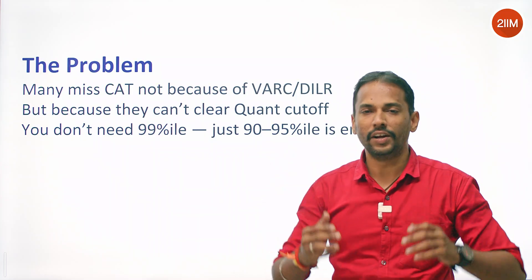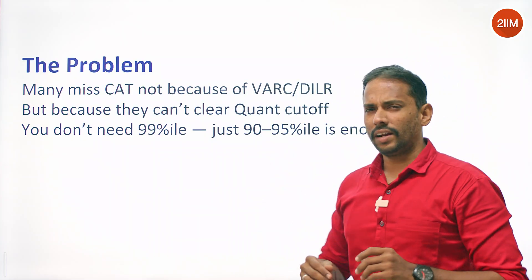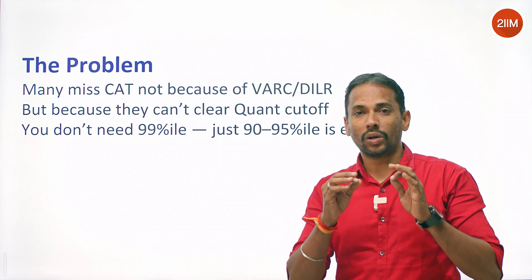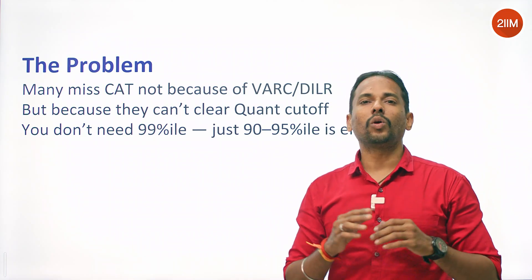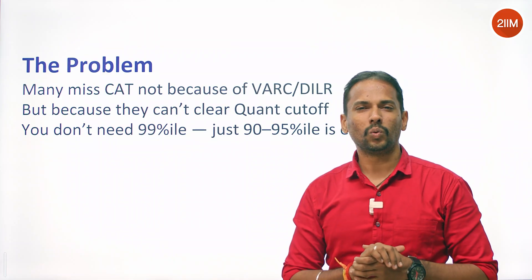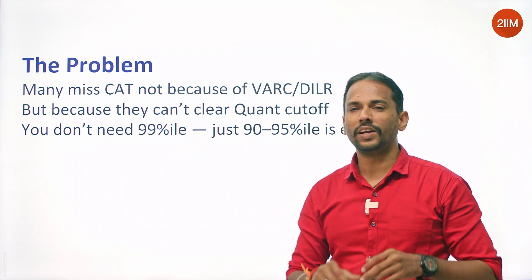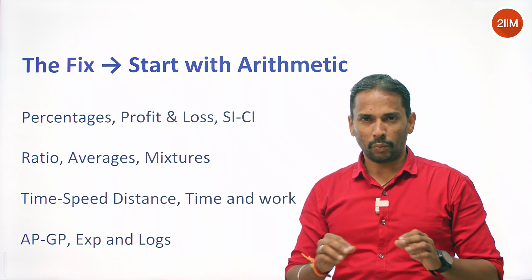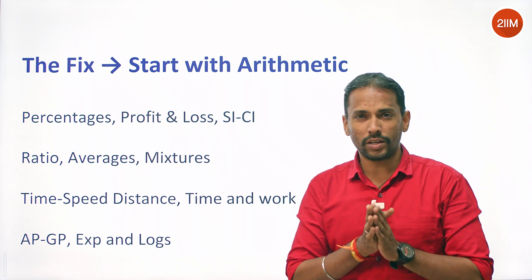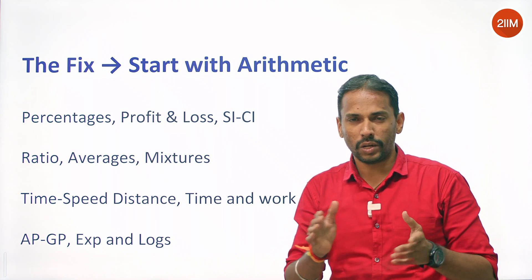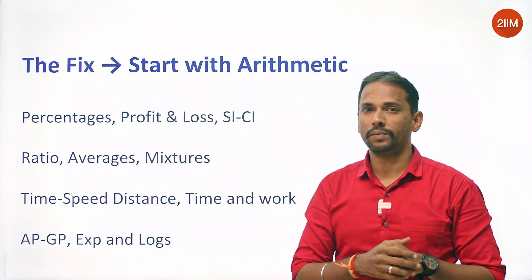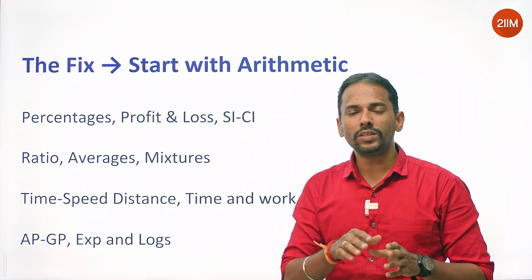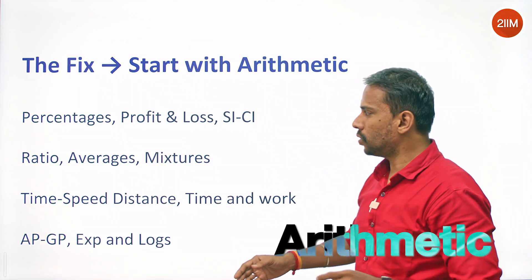You don't need a 99 percentile to achieve that 90-95 percentile. There are many good colleges. So how are you going to manage? The fix is: you will have to sit with arithmetic topics, because you have a short duration — two and a half to three months before your CAT exam. Preparing for quants, you have to start with arithmetic topics.